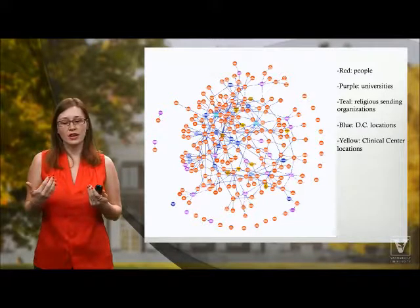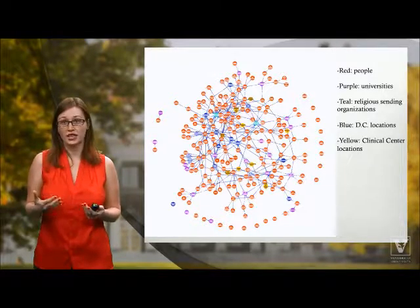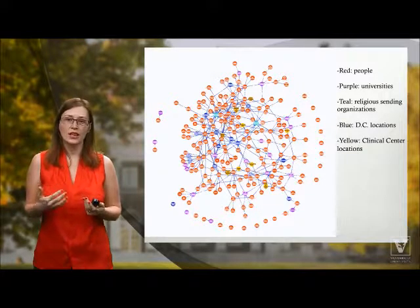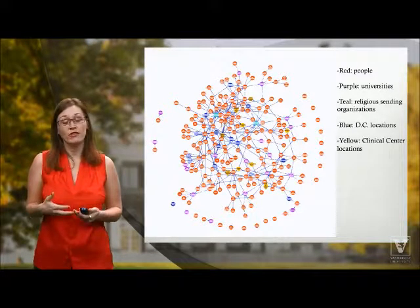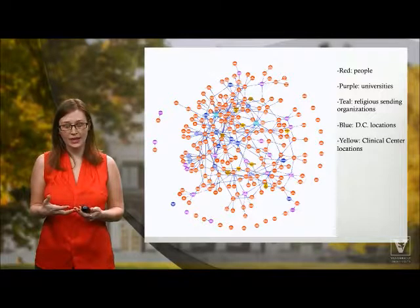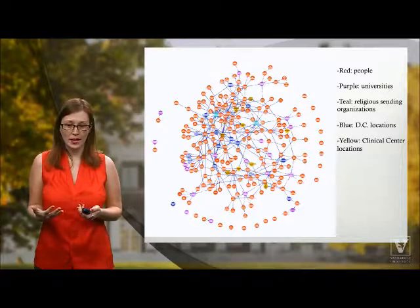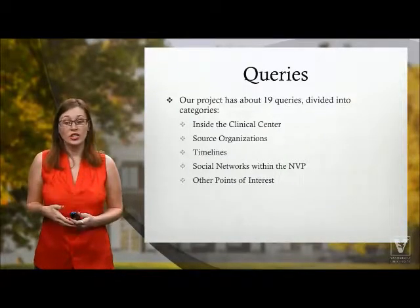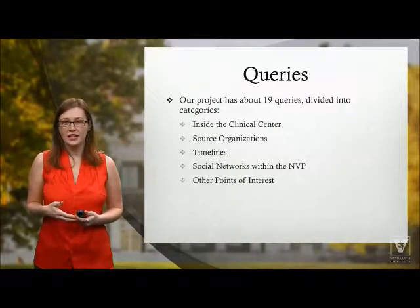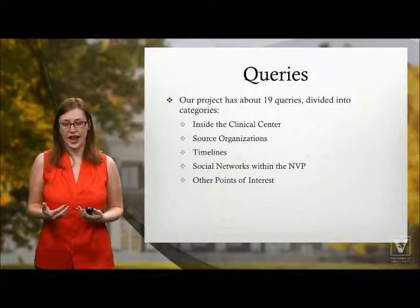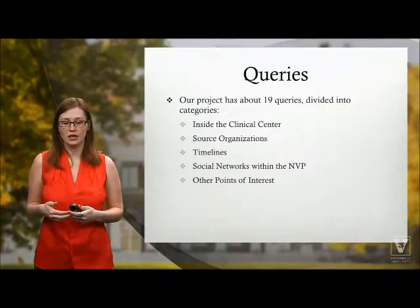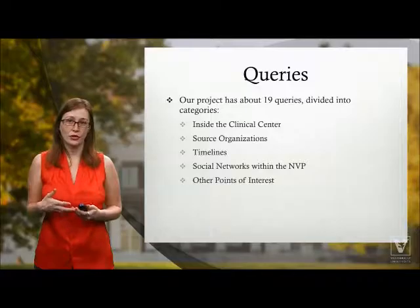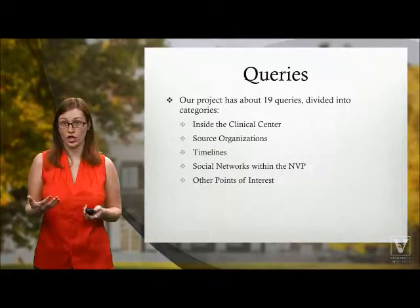When I first started entering information into the graph gist it was very orderly and small and manageable. But that's the thing with Neo4j — the more information you add into it the messier it gets. This is where queries come in. Queries are a way to make sense of this data. Our project has 19 queries currently and they're divided into different categories such as inside the clinical center, timelines, and social networks within the NVP. I'm going to walk you through three of these queries to show you what Neo4j can do.